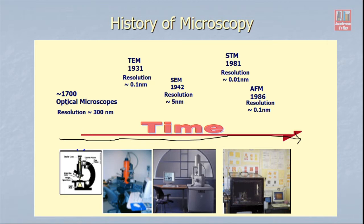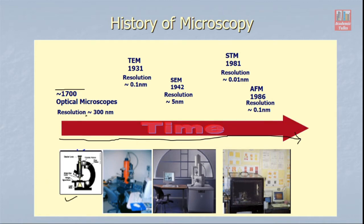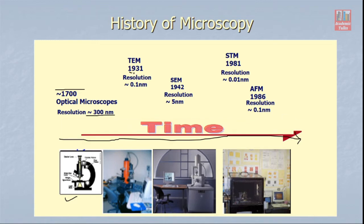Looking at this timeline: in the beginning, near about year 1700, the microscopes available were optical microscopes, and the resolution possible was about 300 nanometers. After several hundred years, in the last century, a lot of developments took place in science and technology. We started working with very small features and the need arose to develop new techniques to view and manipulate those small dimensions. In 1931, the transmission electron microscope was developed — a very popular technique. This very sophisticated equipment achieved a resolution of 0.1 nanometers.